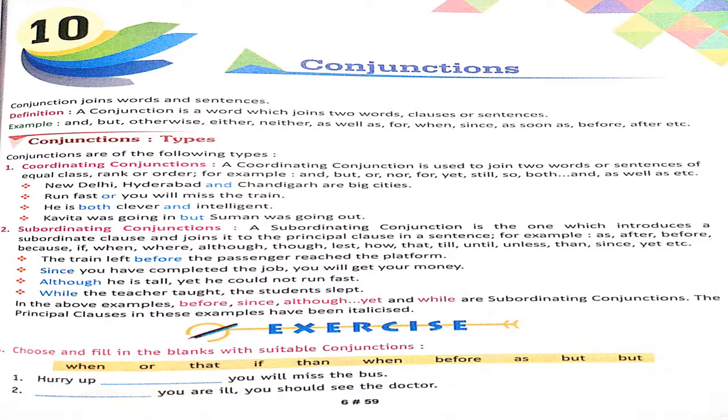As you can see on your screen, your lesson number is conjunctions. Conjunctions means, if you look in Hindi, it is called Yojak.